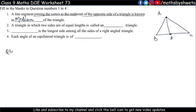Question number 2: A triangle in which two sides are of equal length — tell the name of the triangle in which two sides are equal. You will know that it is an isosceles triangle.